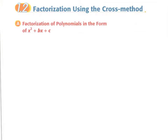Hi students. Today in this section we are going to talk about the factorization of the polynomial x squared plus bx plus c, and note that the coefficient of x squared is equal to 1. For example, let's say we have to factorize the expression x squared plus 5x plus 6.